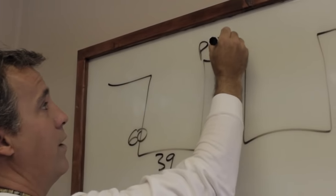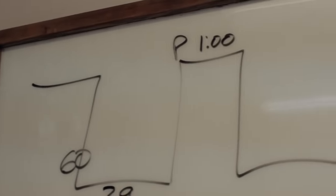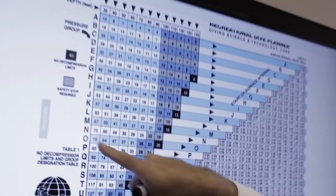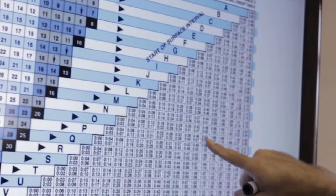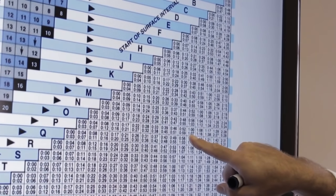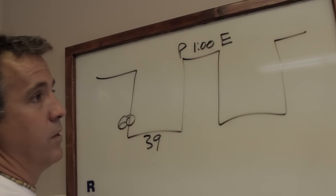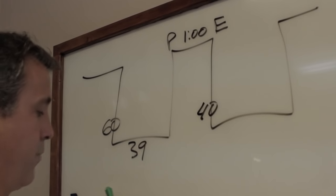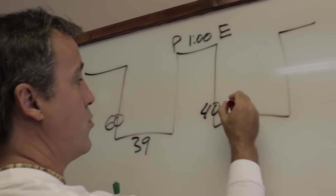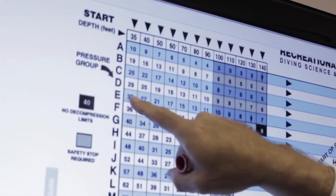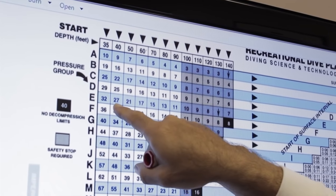We stay out of the water for one hour, and now we are in pressure group E. If you're in pressure group P and you stay out of the water for one hour — the range of time is one hour to an hour and seven minutes — now you're in pressure group E. You have to keep up with your residual nitrogen. I can look up my residual nitrogen depending on how deep I'm going. Let's say I'm going to go 40 feet deep. My residual nitrogen would be E at 40 feet deep, where my residual is 27 minutes.